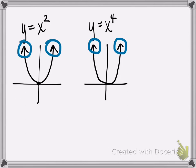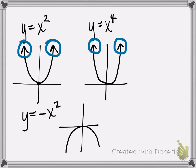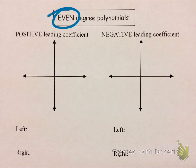If we change the leading coefficient to be negative — say y equals negative x squared — that negative causes a reflection across the x-axis. But notice the ends are still pointing in the same direction; it's just that they're both pointing down.